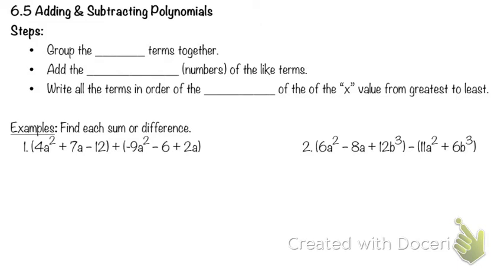So we have three steps we're going to follow to add and subtract polynomials. We are going to group the like terms together. We're going to add the coefficients — coefficients are the numbers in front of the like terms. And we're going to write all the terms in order of the degree of the x value from greatest to least, also known as standard form, descending but alphabetical.